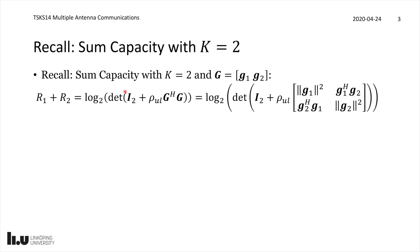Let's recall some results about the sum capacity for the case of two users. The uplink sum capacity, when we have a channel matrix G containing columns G1 and G2, has the following form: the rate of user 1 plus the rate of user 2 equals log2 of the determinant of an identity matrix of size 2, plus rho_uplink times the product of the channel matrix and its Hermitian transpose, resulting in a 2×2 matrix. On the diagonal we get the squared norm of each channel vector, and on the off-diagonal we get the inner product between the two channel vectors. All vectors are M-dimensional.